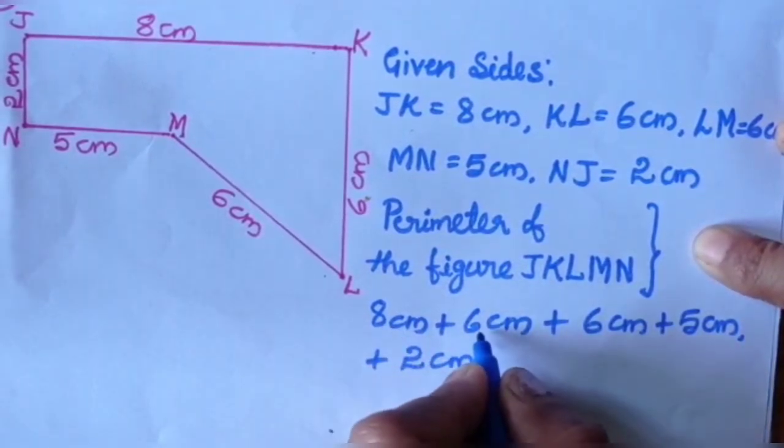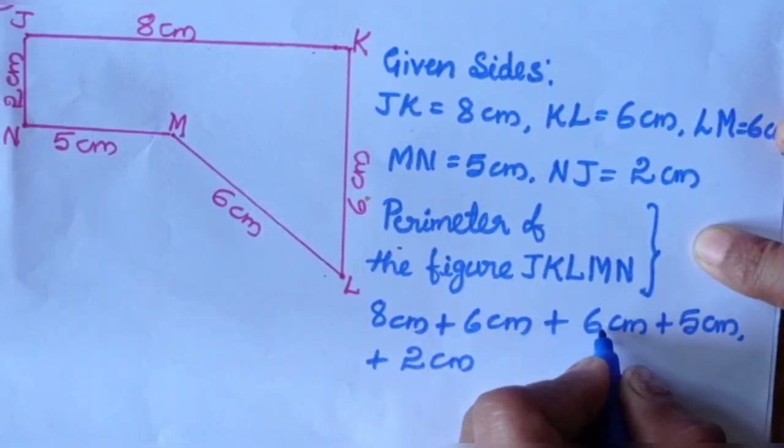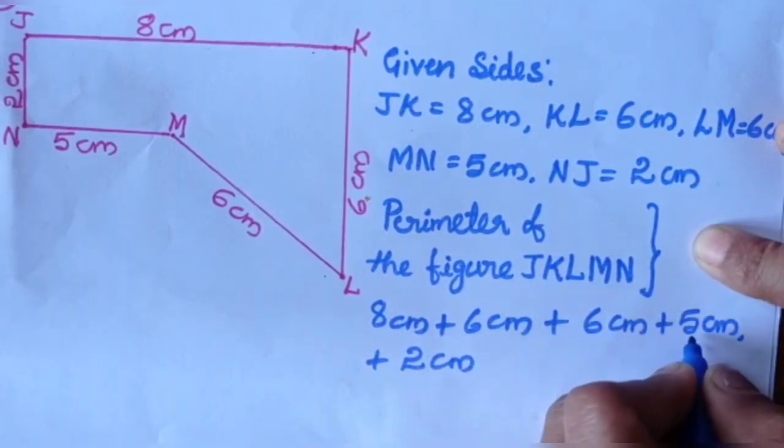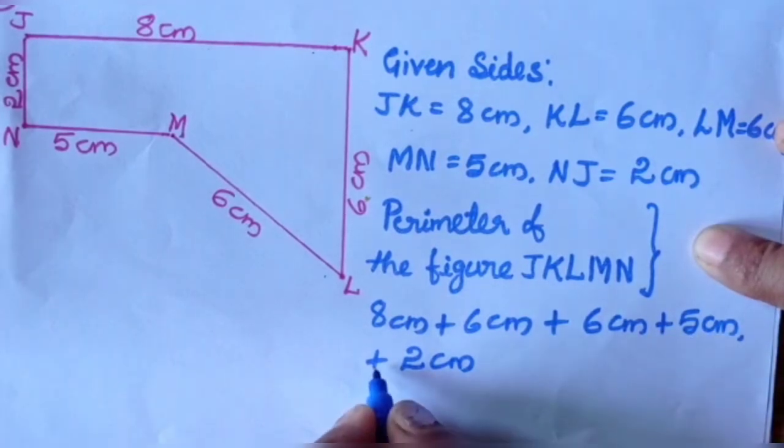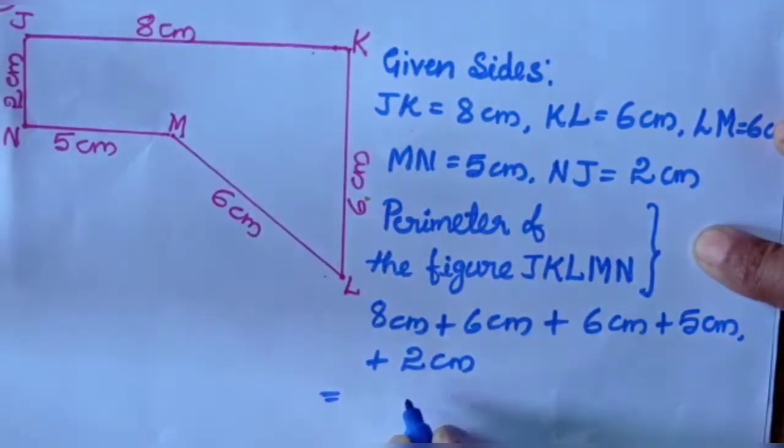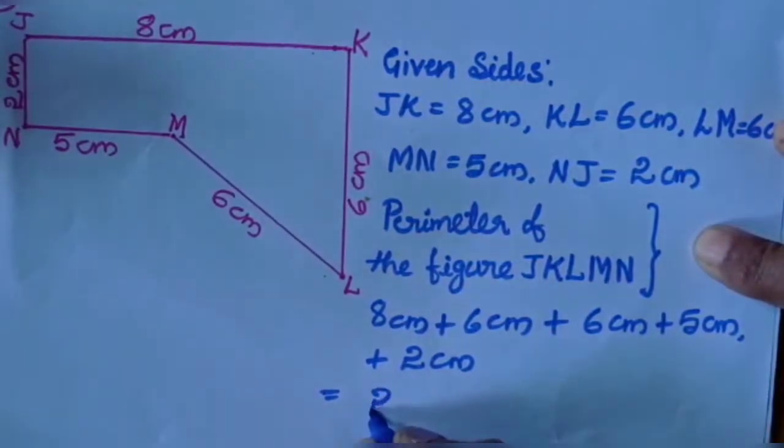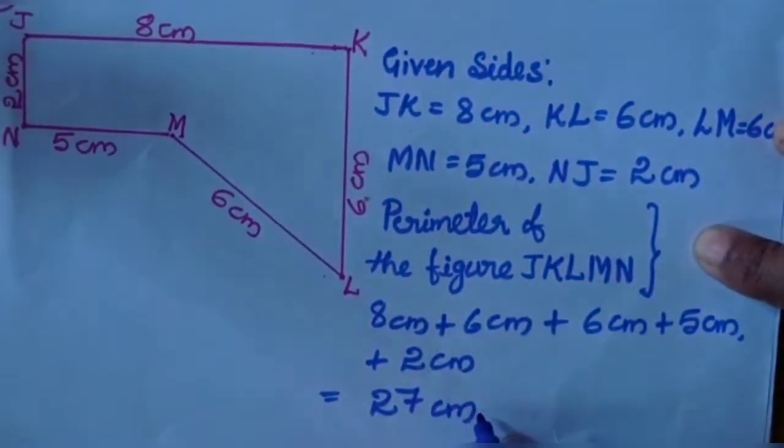8 plus 6 equal to 14 cm. 14 plus 6, 20 cm. 20 plus 5, 25 cm. 25 plus 2, 27 cm. So total perimeter of the figure is 27 cm.